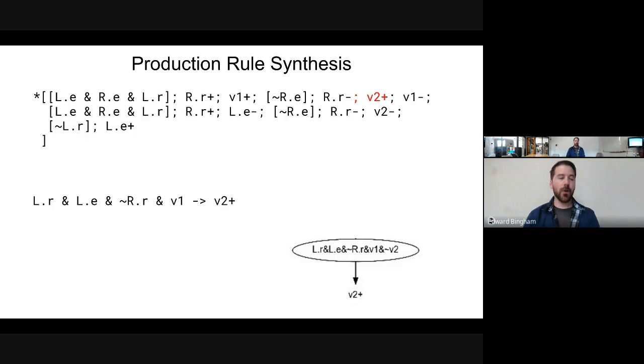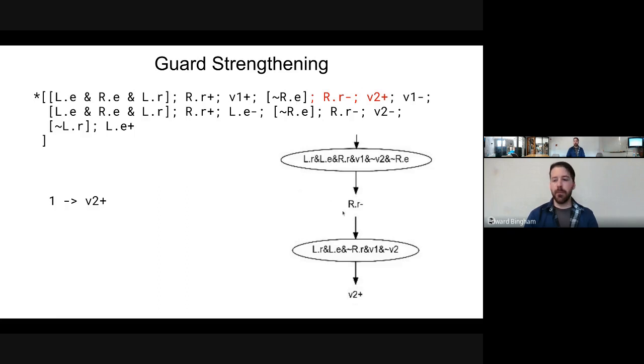Rather than starting with this fully specified production rule, we're going to back it up to 'true yields V2 up'. We're going to start looking for terms that we need to add in to make sure this transition only fires in this semicolon before the transition. So the first thing we look at is the place before, and the transition before that semicolon. We're just walking our way back through this HSE.